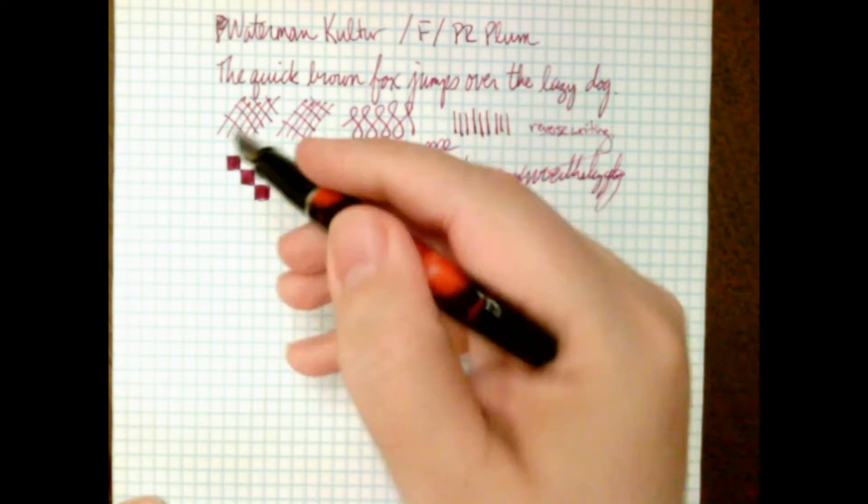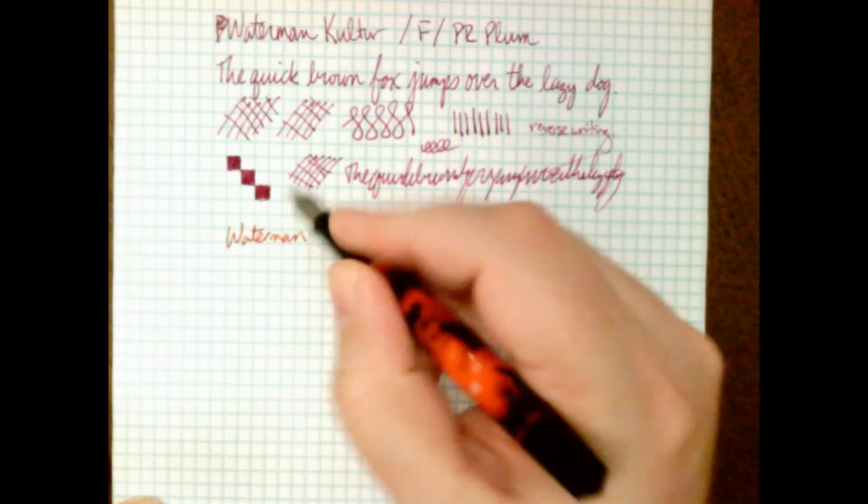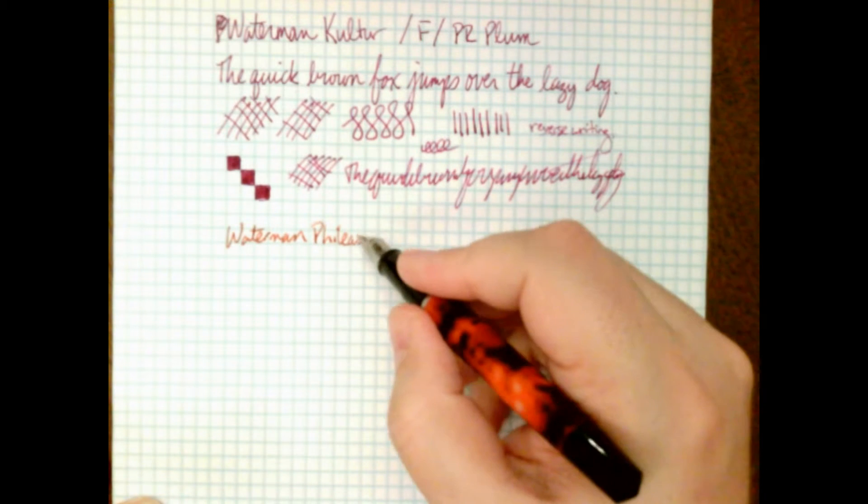We try to write something fast here. And you can see that's pretty much all there. So, no troubles with the flow. It's just, it's a fine point nib. And if you're not accustomed to a fine point nib, it can be a little weird sometimes. But, alright, so that's that one. Now we have this one. This is what I'm just going to call the Phileas on the assumption that there's a difference. Again, this is a fine point nib.